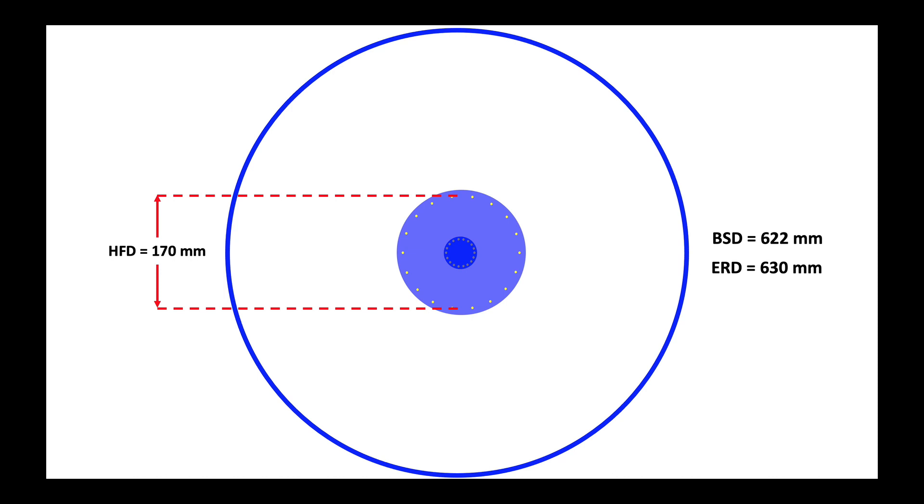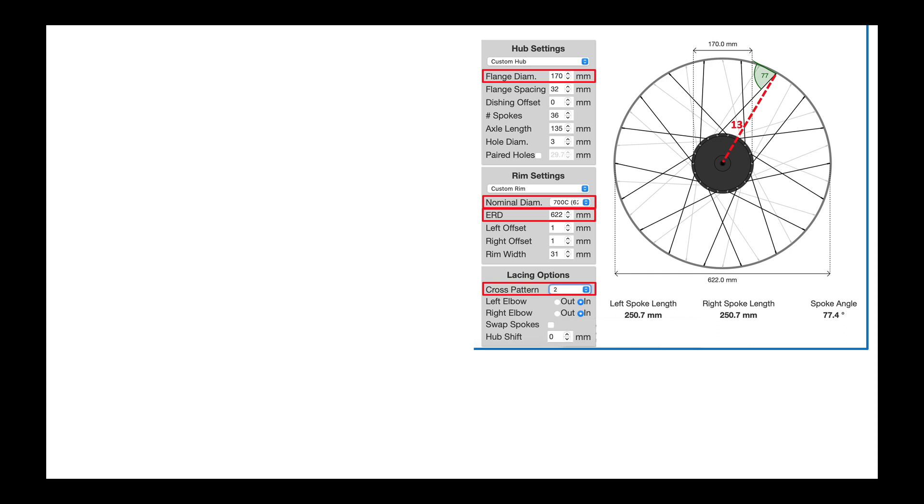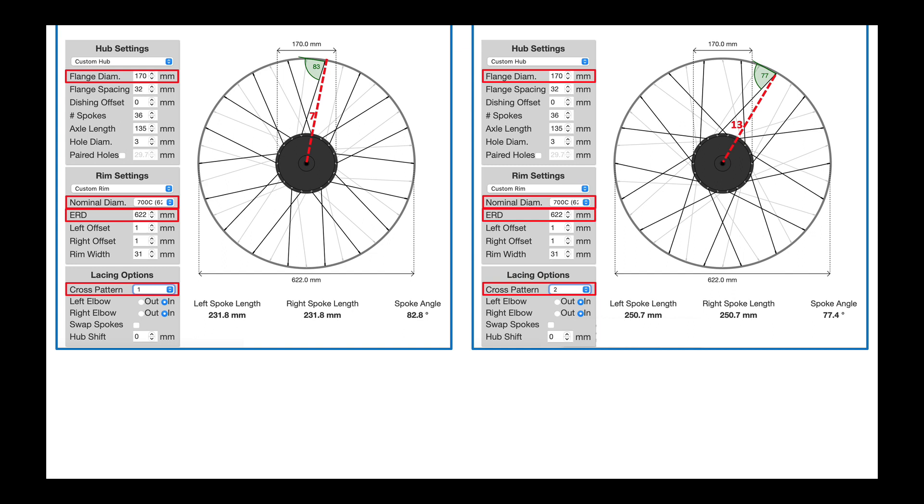Back to my 700C wheel with a motor hub in it, with a hub flange diameter of 170 millimeters. With a two cross, I have an angle that I think is still unacceptable of 13 degrees. But over on the left, I have a nice relaxed angle of 7 degrees for my one cross. And here I see my effective lever arms and torque angles.